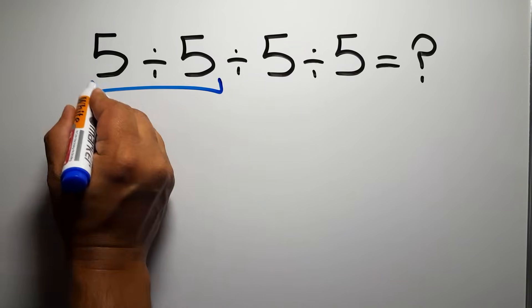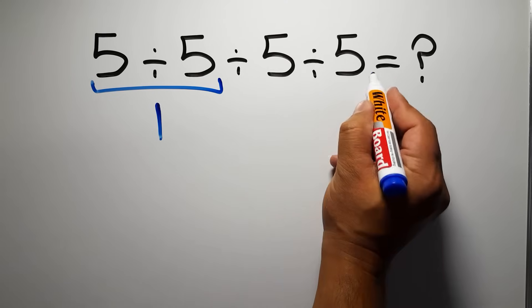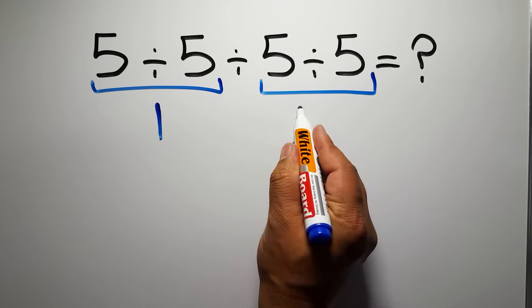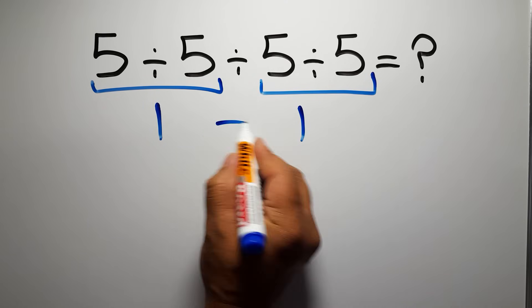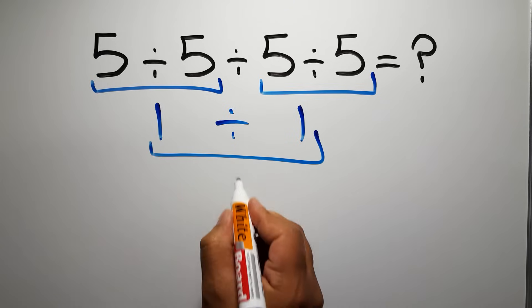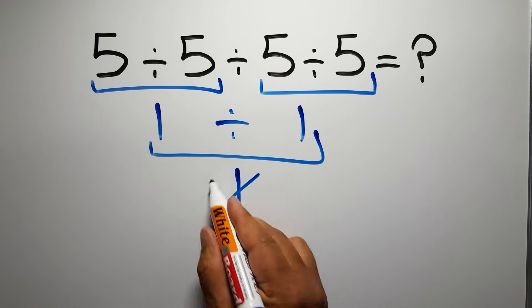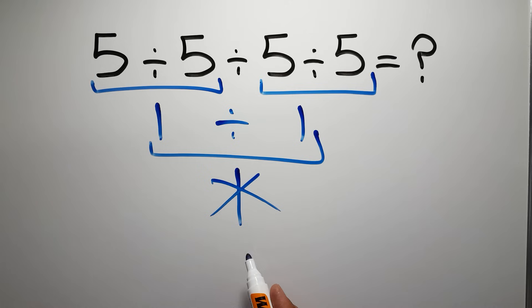5 divided by 5 is just 1, and again here we have 5 divided by 5, so 1 divided by 1 gives us 1. But this answer is not correct because according to the order of operations, when we have more than one division in an expression, we have to work from left to right.